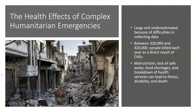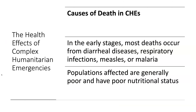Malnutrition, lack of safe water, food storage shortages, and breakdown of health services can lead to illness, disability, and death. In the early stages, most deaths occur from diarrheal diseases, respiratory infections, measles, or malaria — infectious causes. Populations affected are generally poor and have poor nutritional status to begin with or as a result of the emergency.